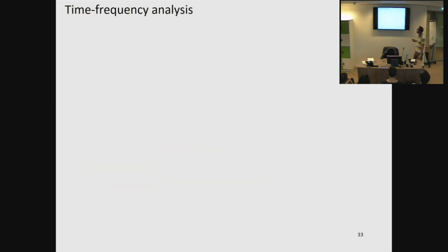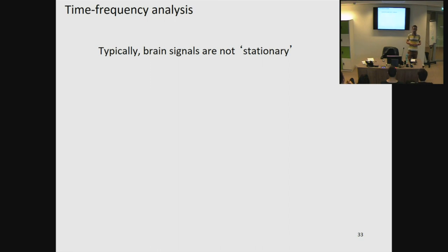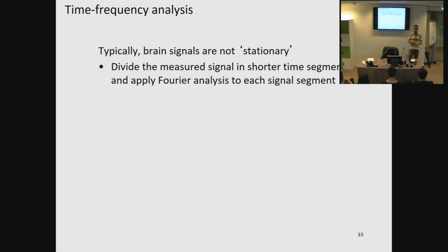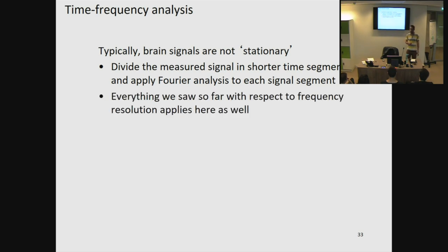Moving on to time-frequency analysis. In time-frequency analysis, we typically think of brain signals as non-stationary — especially when studying a cognitive paradigm, we think that brain oscillations change their power throughout the cognitive process. What we do in time-frequency analysis is we divide our measured signal into small segments and then apply Fourier analysis independently on each segment. All the problems we ran into before — discrete and finite sampling, spectral leakage, tapering — all apply to time-frequency analysis as well.